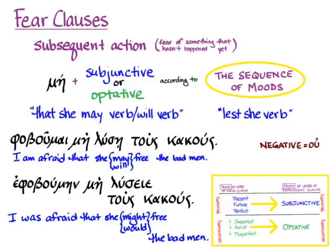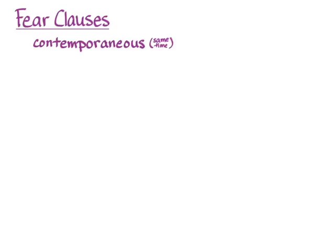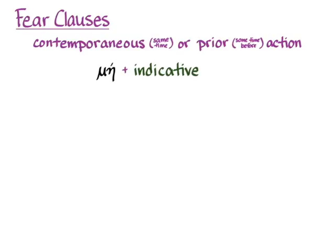That's fear clauses with subsequent action — μή plus the subjunctive or optative according to the sequence of moods. But we can also have fear clauses expressing what we're afraid of that is happening now, contemporaneous with the main verb, or fear about something that happened prior to the main verb. For those kinds of fear clauses we still use μή as the conjunction, but we use the indicative for the verb of the fear clause.